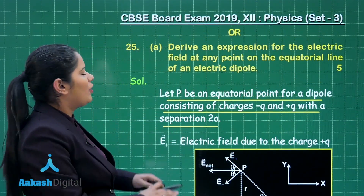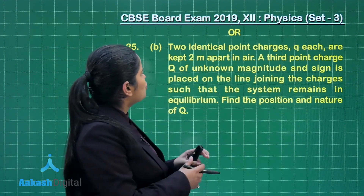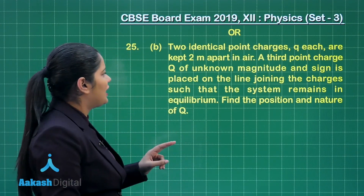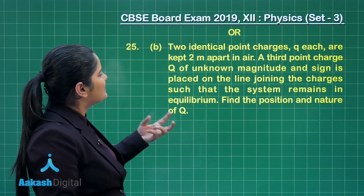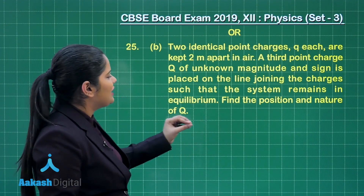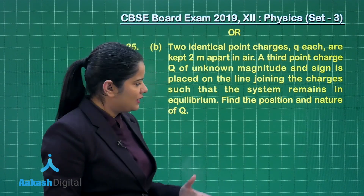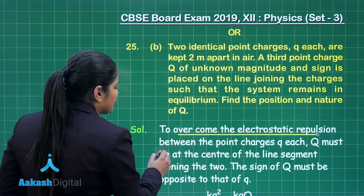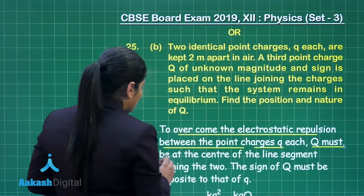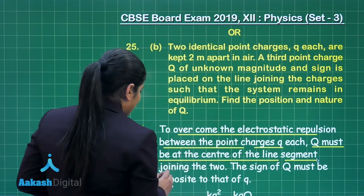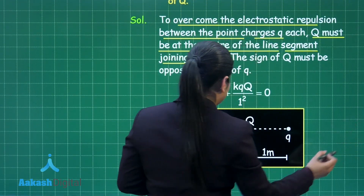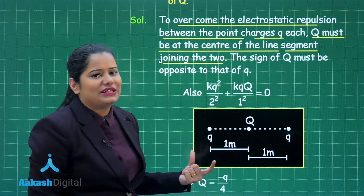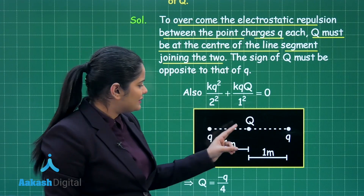Let us move to Part B of the same choice of question number 25. This says: two identical point charges Q each are kept 2 meters apart in air. A third point charge of unknown magnitude and sign is placed on the line joining the charges such that the system remains in equilibrium — find the position and nature of the third charge. To overcome the electrostatic repulsion between the two charges Q, the third charge capital Q must be placed at the center of the line segment joining the two charges.